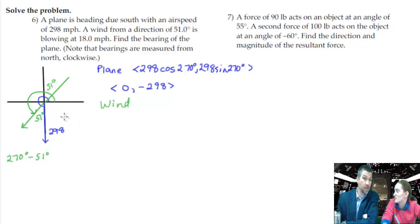Or 180 plus 51. That's not the same thing. This is 51. We're 51 short of 270. Yeah, so 270 minus 51. That's what I said. Okay.